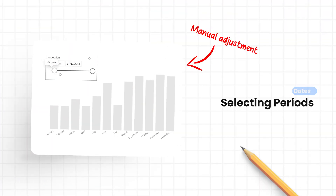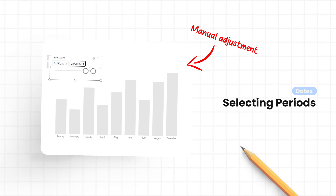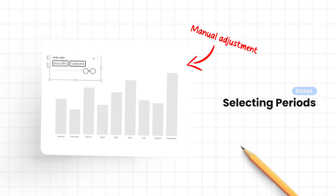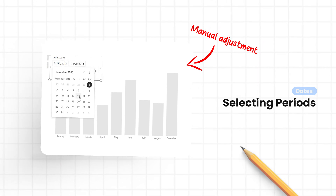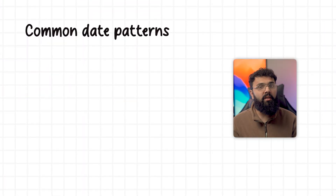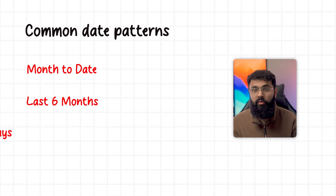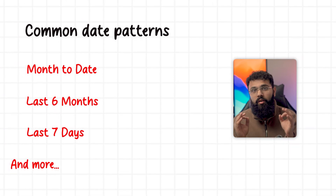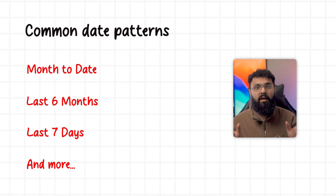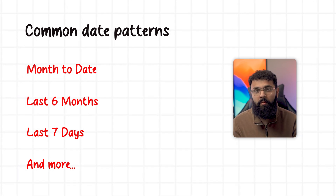Adjusting time periods is a fundamental part of any Power BI report, and this is often done by your users selecting a date range to filter the data they need to see. But there are common patterns that users might be selecting — for example, the last month, the last six months, or the last seven days — and these are patterns that your users are manually adjusting every time.